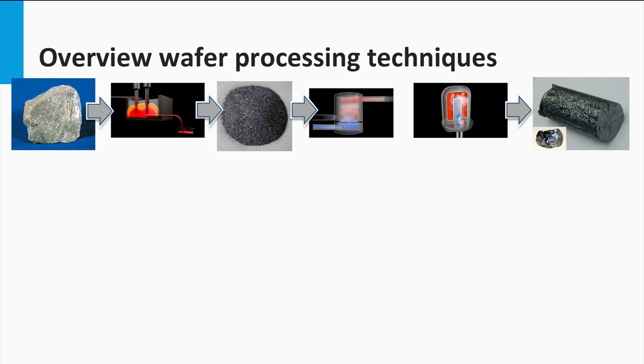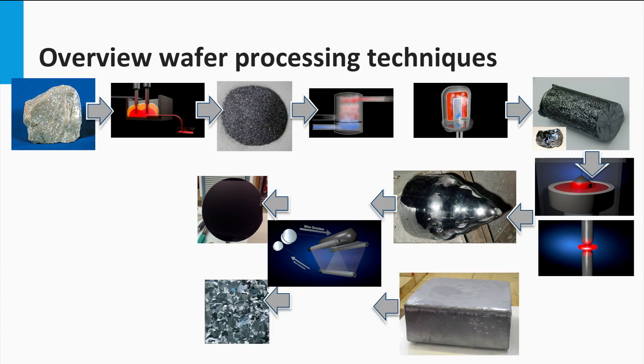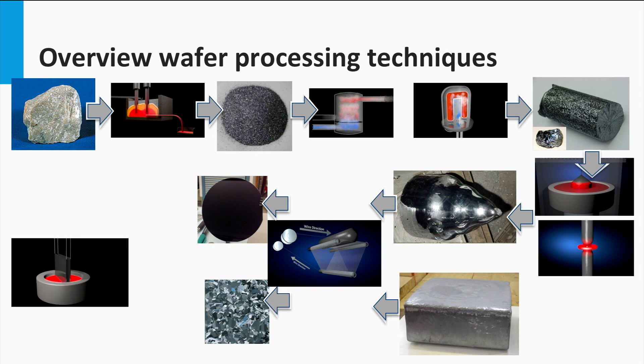Summarized, we have discussed how out of quartzite we first make metallurgical silicon and then polysilicon. Monocrystalline ingots are made using either the Czochralski or the float zone process. Multicrystalline ingots are made using a casting method. Wafers are being made by sawing these ingots. A method which does not have any kerf losses is the so-called ribbon silicon approach.